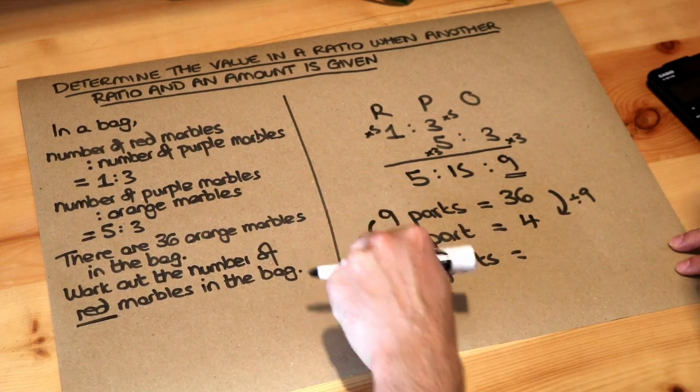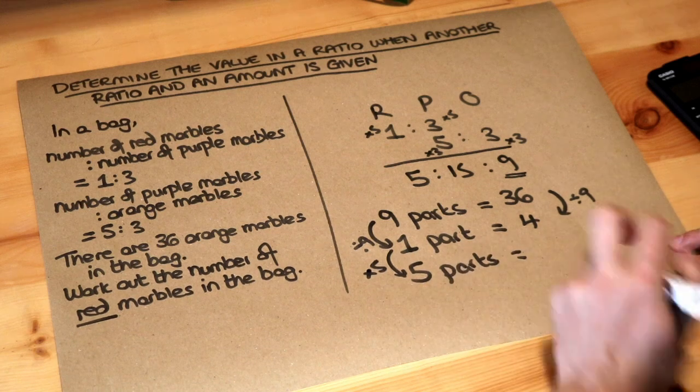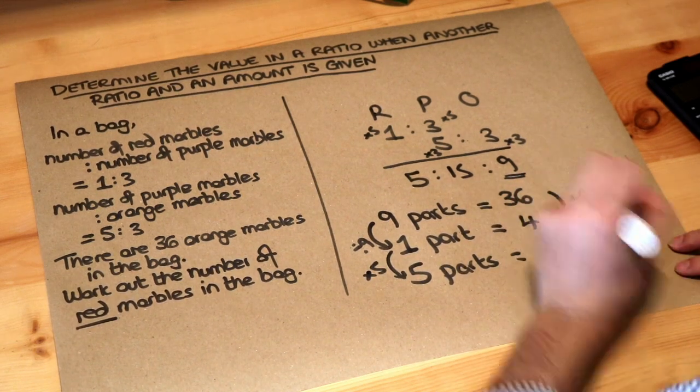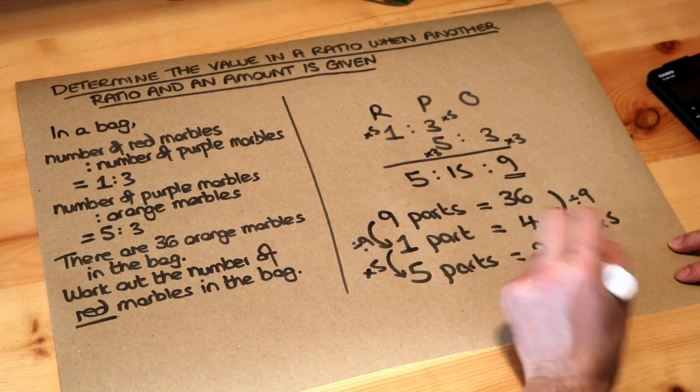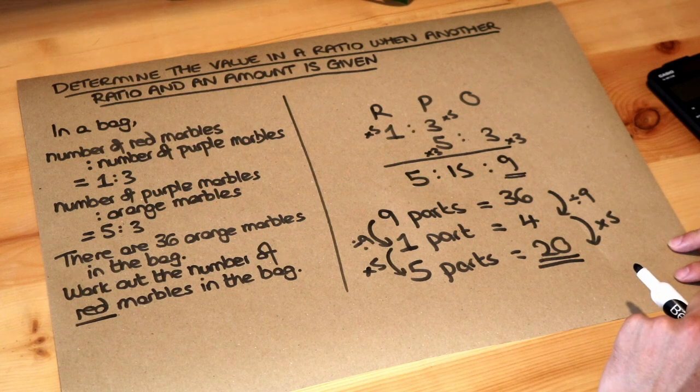Remember we either divide or times as we go from one line to the other, so this we have to times by five, do the same thing. Four times five is 20, so therefore that is the answer, there are 20 red marbles.